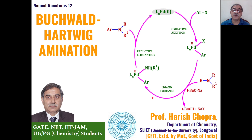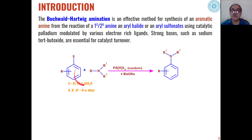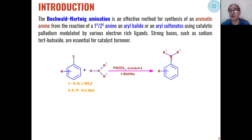The only difference from the previous lectures is that here, formation of a carbon-nitrogen bond takes place instead of a carbon-carbon bond. This Buchwald-Hartwig amination takes place between aryl halides or aryl sulfonates when reacted in presence of primary or secondary amines using palladium catalyst, giving aromatic amines as the product through formation of a new carbon-nitrogen bond.